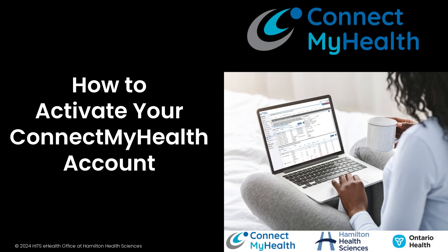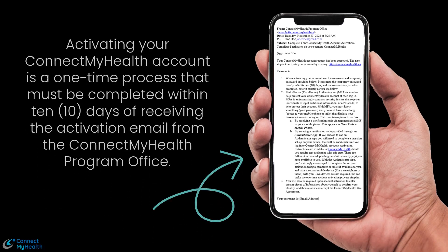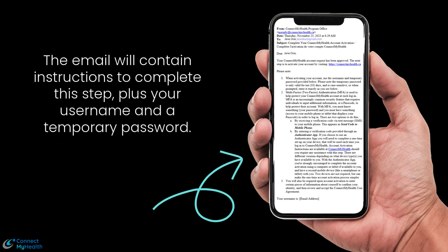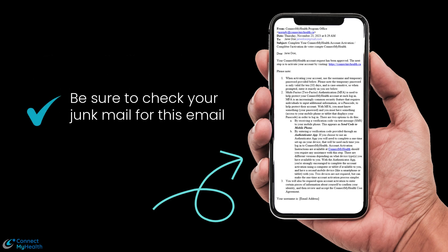This short video reviews how to activate your ConnectMyHealth account. Activating your ConnectMyHealth account is a one-time process that must be completed within 10 days of receiving the activation email from the ConnectMyHealth program office. The email will contain instructions to complete this step, plus your username and a temporary password. Be sure to check your junk mail for this email.